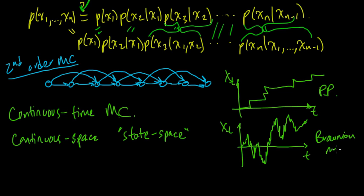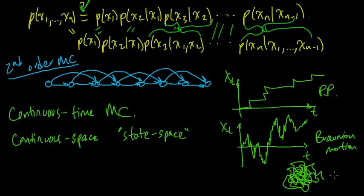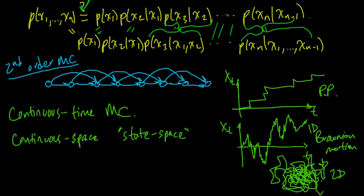Einstein analyzed Brownian motion in one of his early papers in 1905. In 2D, Brownian motion is used to model a randomly moving particle, like a particle of pollen in a glass of water. Those are some of the main generalizations.